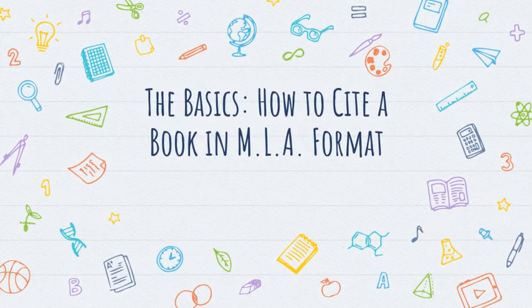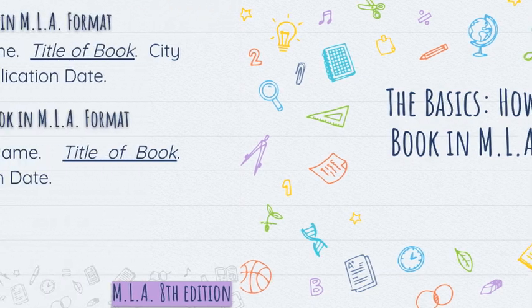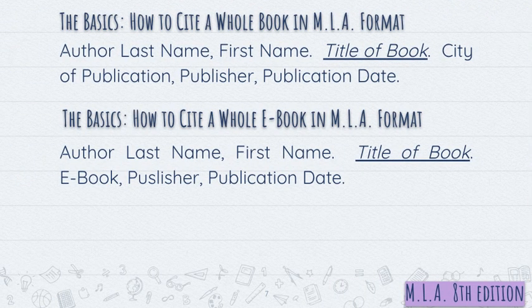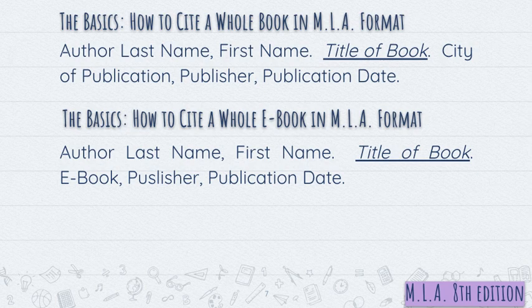Here are the basics on how to cite a book in MLA format. If you're going to cite an entire book, put the author's last name, comma, their first name, a period, space. Put the title of the book in italics. If you're writing this out by hand, instead of italics, you can underline the title of the book. When you type it up, you know to put this part in italics. Put a period, a space. Write the city of publication, comma, the publisher's name, comma, and then the publication date.